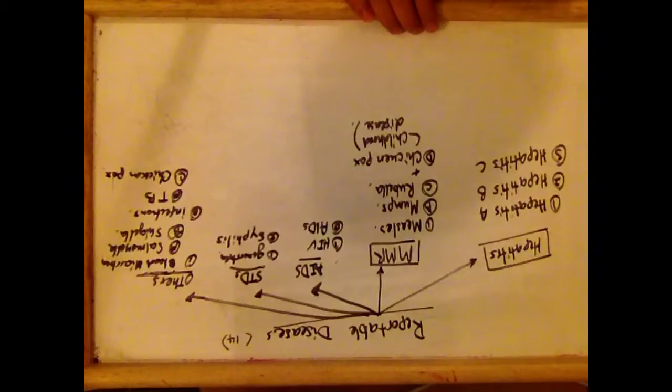So that's how we memorize all those reportable diseases. 14 of them remember Hepatitis, MMR, AIDS, STDs, and others.